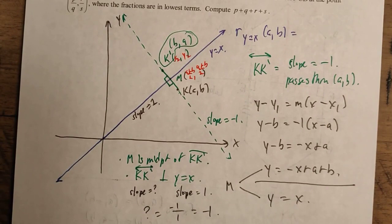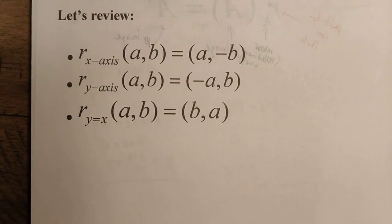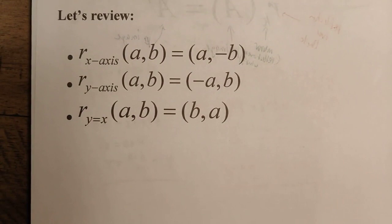In review: if we reflect a point A, B over the x-axis, we negate the y-coordinate to get A, negative B. If we reflect over the y-axis, we negate the x-coordinate to get negative A, B. And if we reflect over the line y equals x, we reverse the order of the coordinates and end up with B, A.